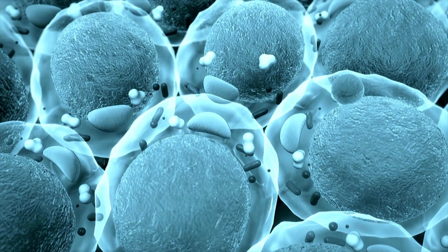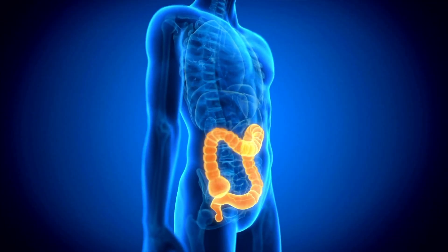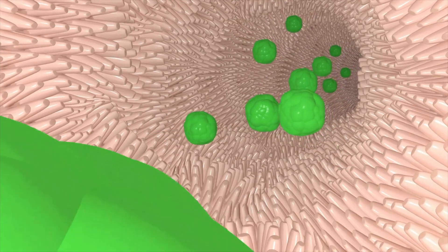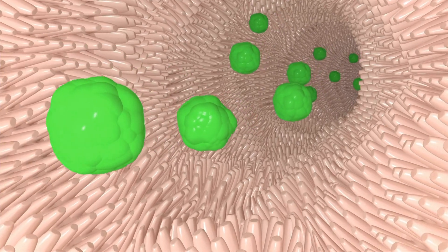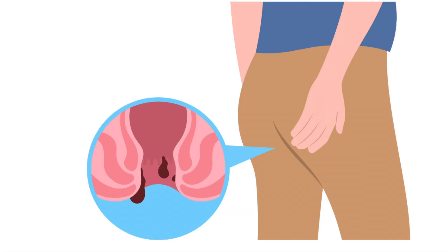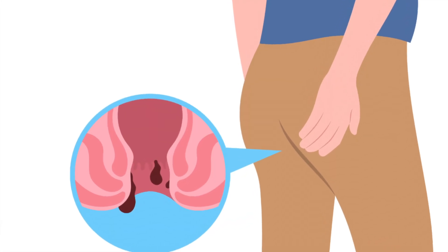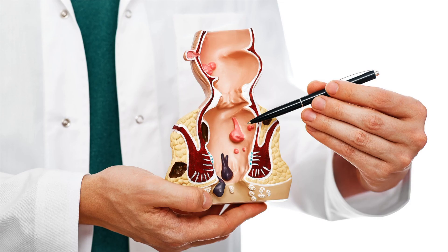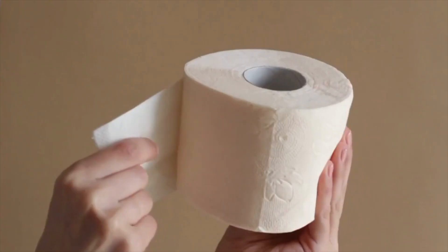Because water is absorbed, when the colon works well the waste should look a lot more solid. The waste, which we now call feces, moves from the colon into the rectum, which is basically a storage area just before your anus. This holds your stool until you're ready to use the bathroom. Now that we understand a little bit more about how the digestive system works, let's look at ulcerative colitis in a bit more detail.